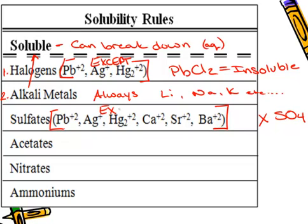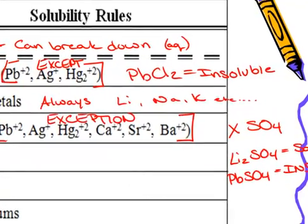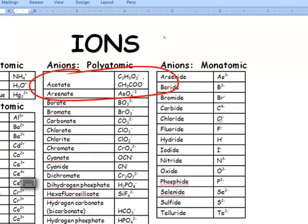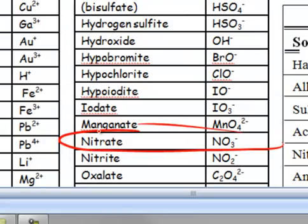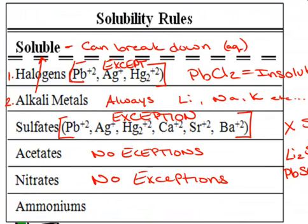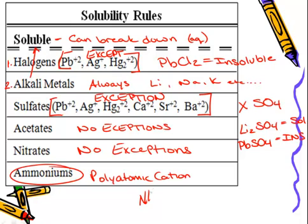If the cation is in the brackets, it's an exception. So lithium sulfate is soluble, but lead sulfate is insoluble. Acetates — whether written as C2H3O2 or CH3COO — are always soluble with no exceptions. Nitrates: things paired with NO3 are soluble with no exceptions. And finally, ammonium — our polyatomic cation NH4+ — anything paired with NH4 is always soluble.